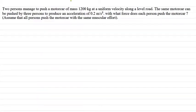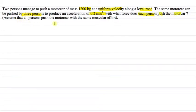Hello everyone, I am your teacher for this question. The question says: two persons managed to push a motor car of mass 1200 kg at a uniform velocity along a level road. The same motor car can be pushed by three persons to produce an acceleration of 0.2 meter per second square. With what force does each person push the motor car? Assume that all persons push with the same muscular effort, meaning the same force.